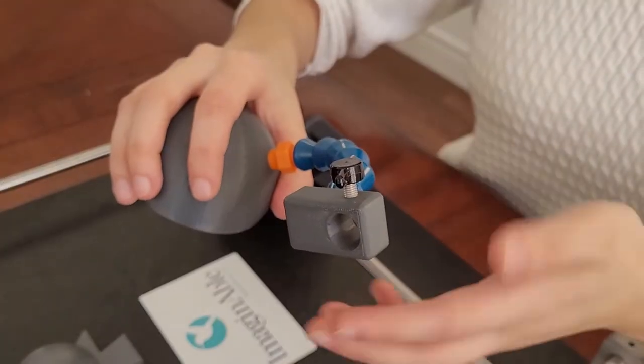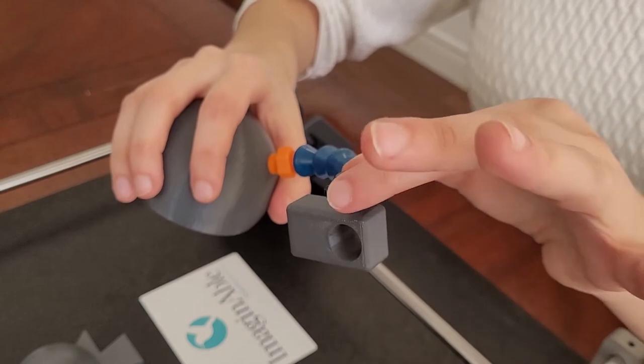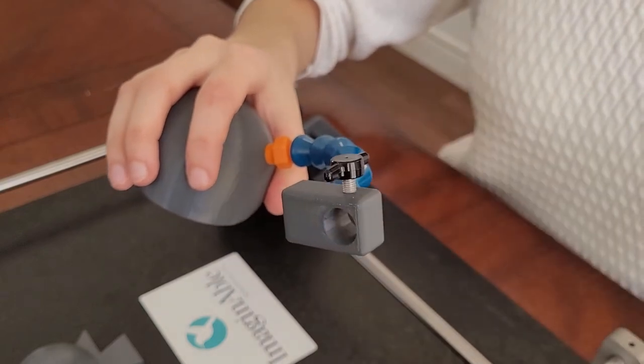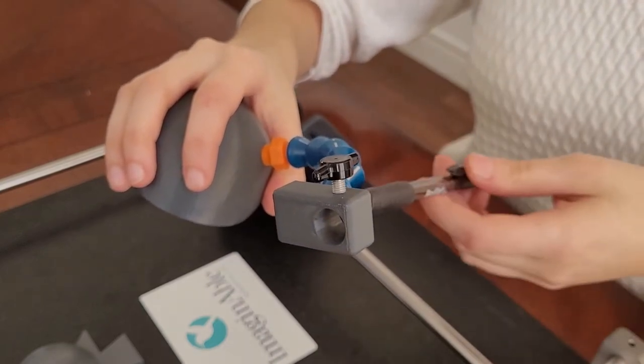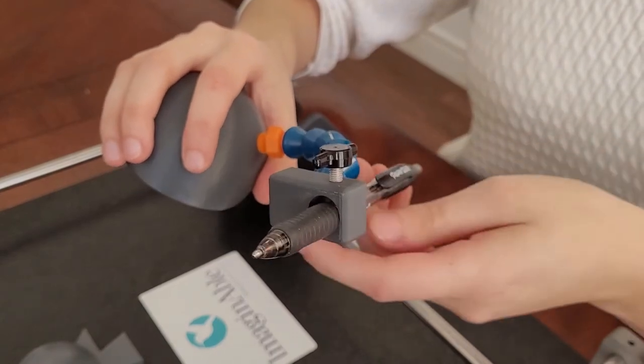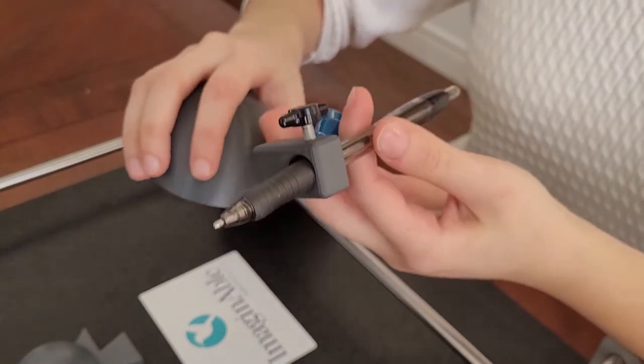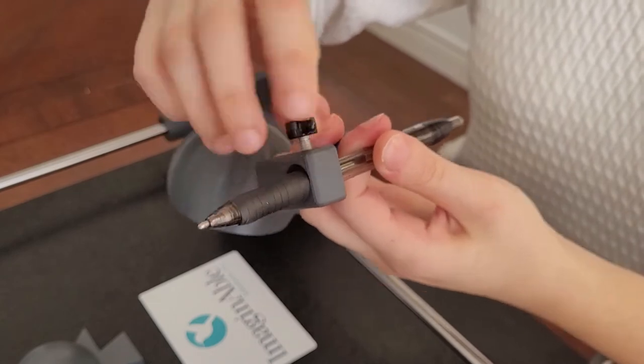The utensil arm is connected to a utensil holder, which includes a thumbscrew to hold our utensil into place. As an example, we are going to use a pen. Insert the pen through the hole and secure the utensil into place by turning the thumbscrew clockwise until it feels secure.